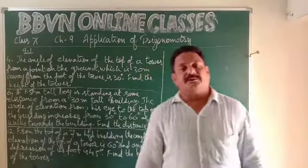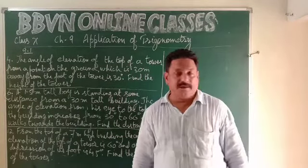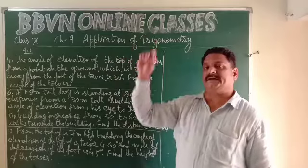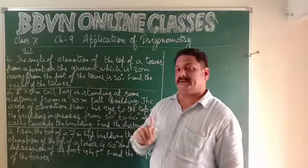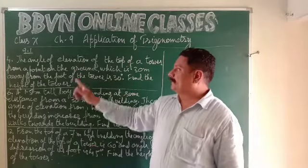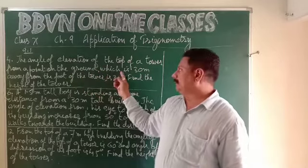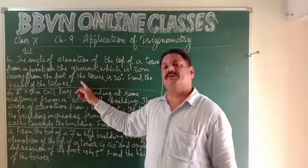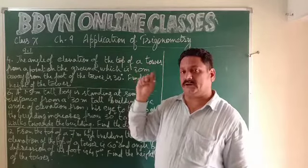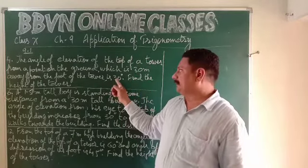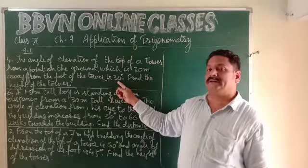Good morning class 10. We are in chapter number 9, Application of Trigonometry. Here are certain questions from the exercises we'll be discussing today. Question number 4 of NCERT Exercise 9.1: the angle of elevation of the top of a tower from a point on the ground, which is 30 meters away from the foot of the tower, is found to be 30 degrees.